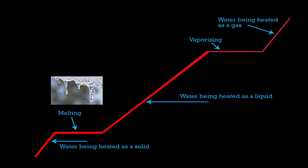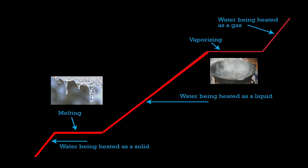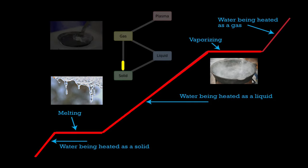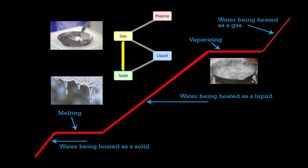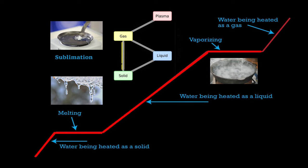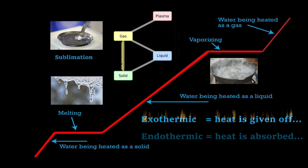When you add heat to a solid, the temperature goes up and then plateaus. The plateau is where the energy is going into breaking the bonds. Once the solid has become a liquid, the temperature starts to rise again. If heated enough that the kinetic energy of the liquid becomes higher than the kinetic energy of the atmosphere, the liquid becomes a gas — this phase shift is called vaporization. Some solids go straight to a gas, like carbon dioxide on Mars, the same as dry ice. This phase shift is called sublimation. Any phase shift either gives off (exothermic) or absorbs (endothermic) energy.